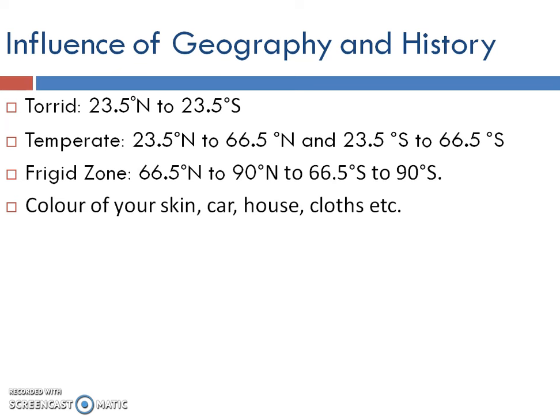If you are living in a tropical area, the color of your car would generally be white. You can see this in India as well — white is the most popular car color. India spans the torrid and temperate zones; in the torrid zone, people prefer white cars because a black car gets extremely hot in summer and even your air conditioner won't help much. The color of your house interior also differs across geographical zones.